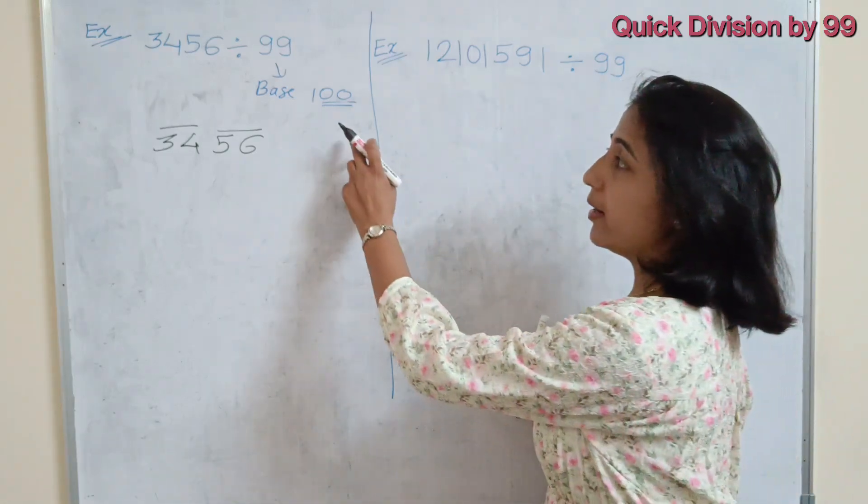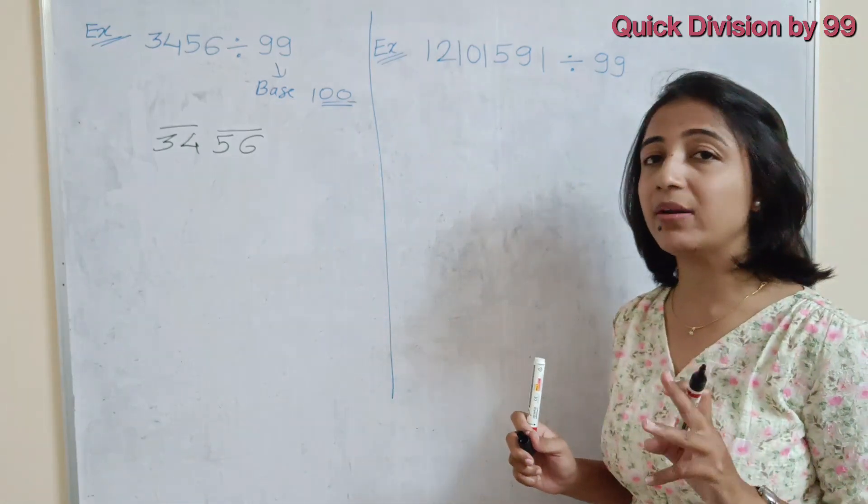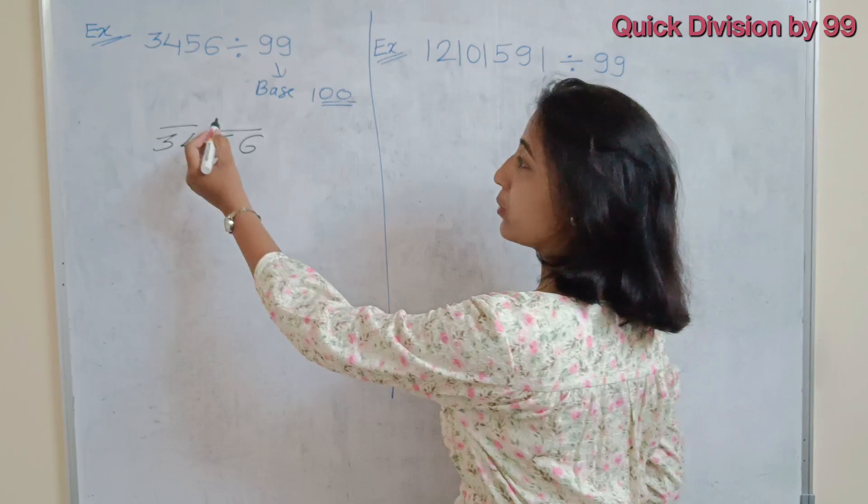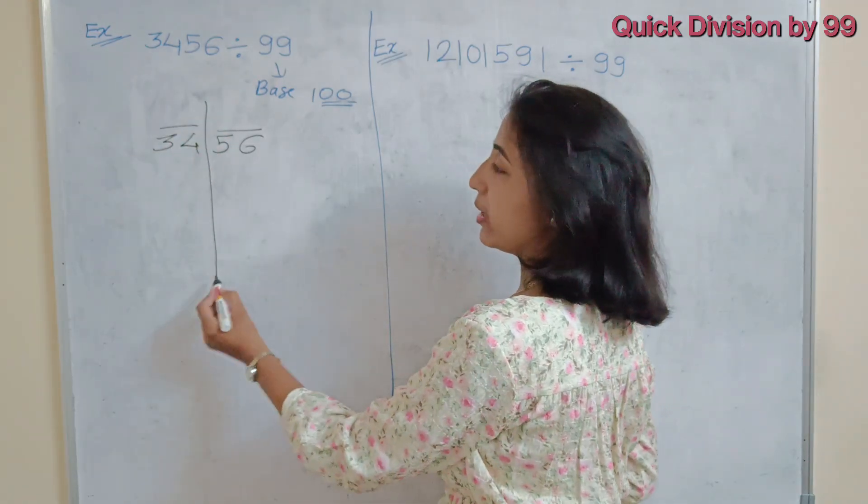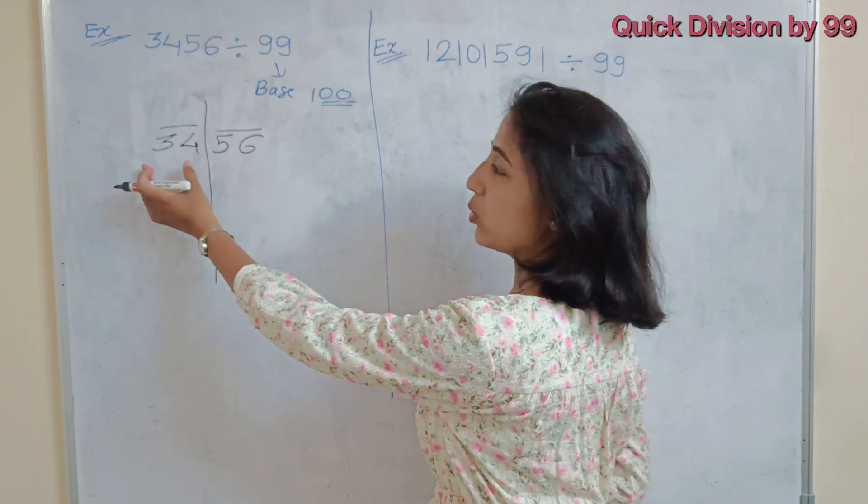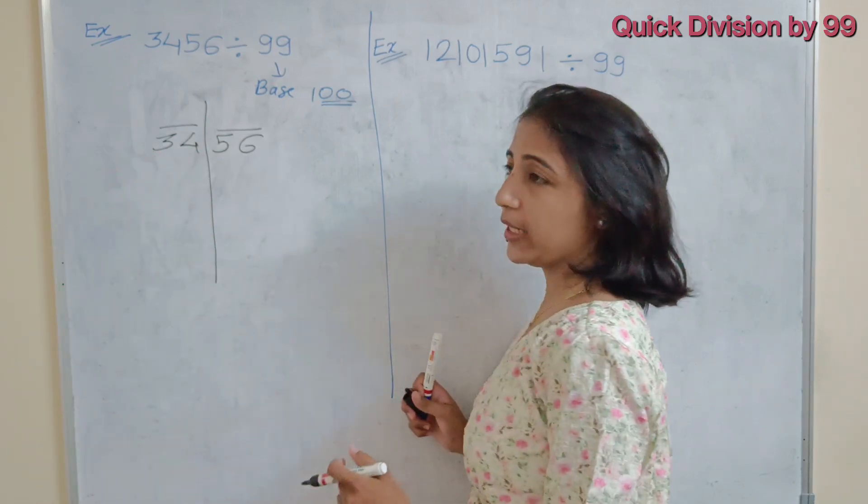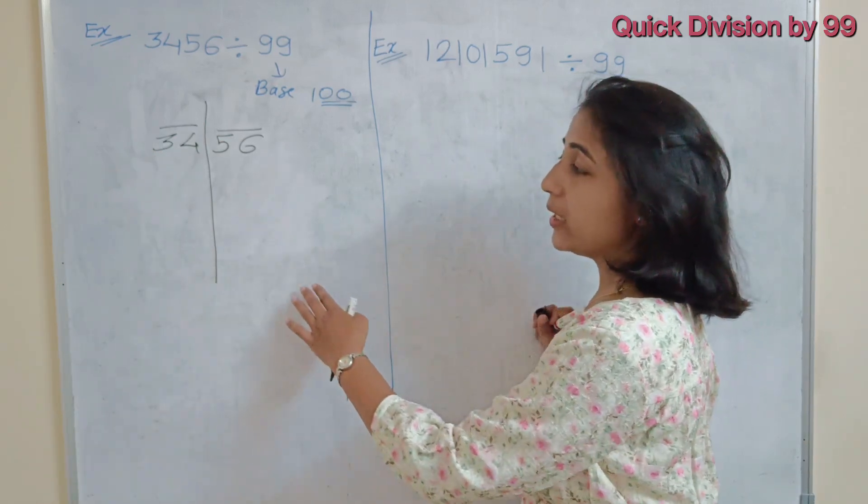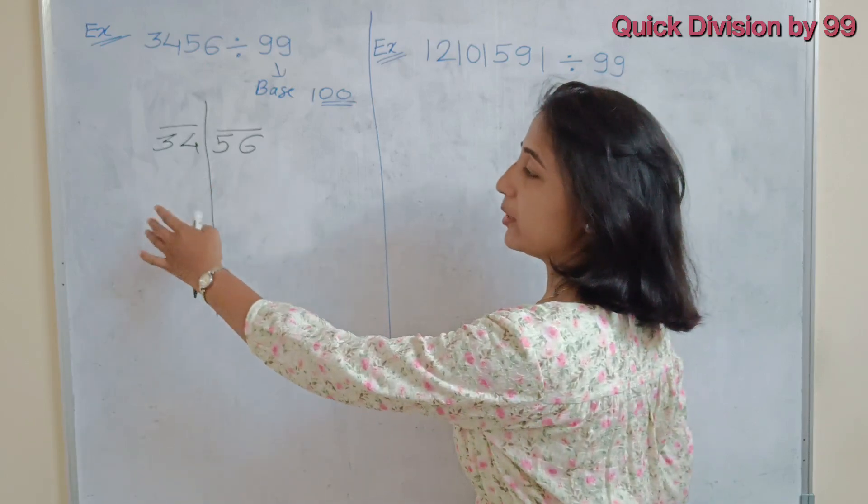Now, because 100 contains 2 zeros, then our remainder will be 2-digit number. So for remainder, break this question in 2 parts. Right side is 2-digit, remaining part we have to write in left side. So right side is representing the remainder and left side will be the quotient.